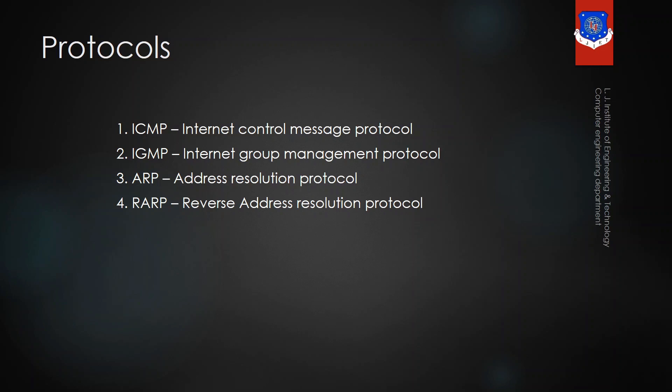Now let's discuss the protocols. The network layer contains four protocols: ICMP, IGMP, ARP, and RARP. ICMP is the Internet Control Message Protocol. For example, when you try to connect to the internet on your laptop and receive an error that you are not able to connect, the error message on your screen is generated by ICMP.